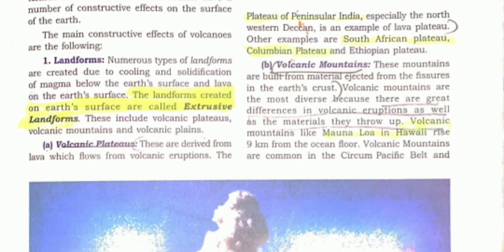When the volcano erupts, the lava on the Earth's surface cools down and results in the formation of landforms. The first type of rock formed is igneous rock. Examples of volcanic plateaus include the South African plateau, the Colombian plateau, and the Ethiopian plateau. These examples are important.